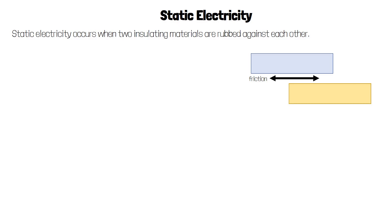Static electricity occurs due to friction when two materials that are both insulators rub against each other. Electrons, which are negatively charged, get transferred from one material to the other.